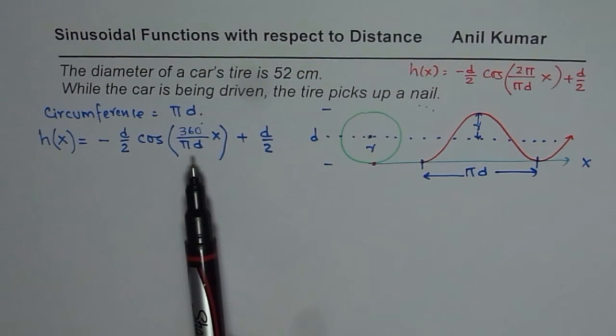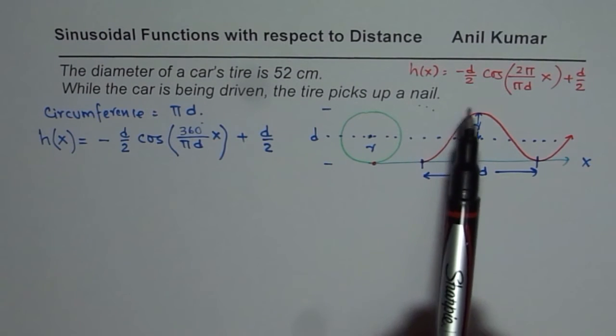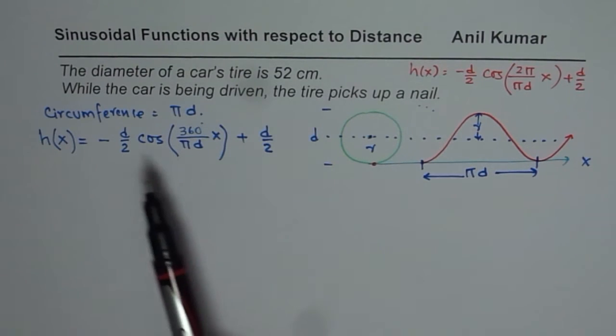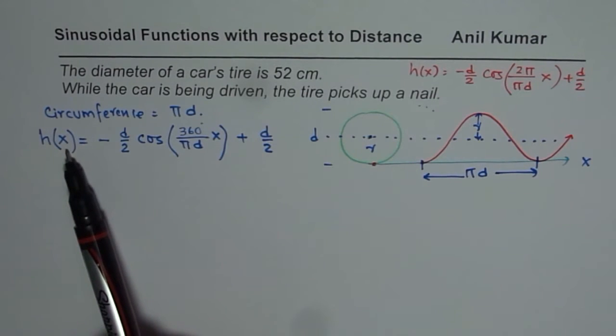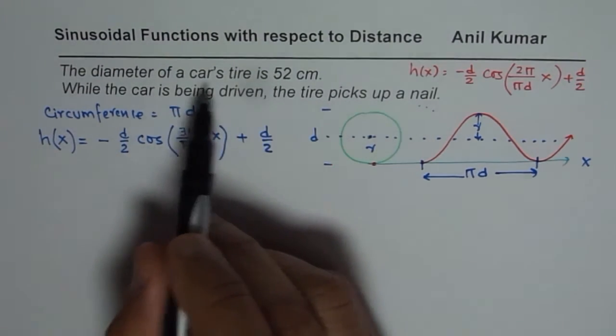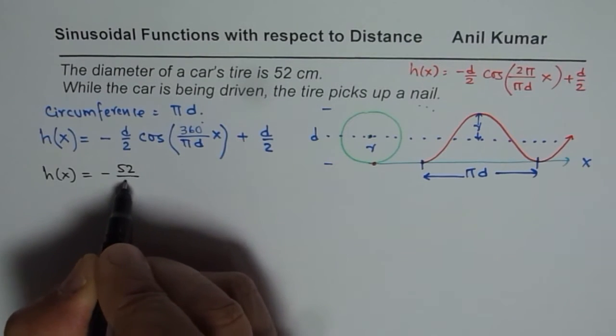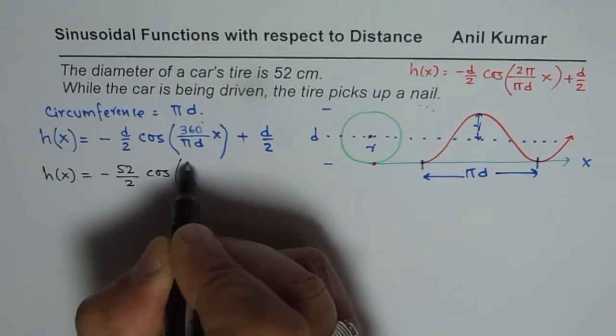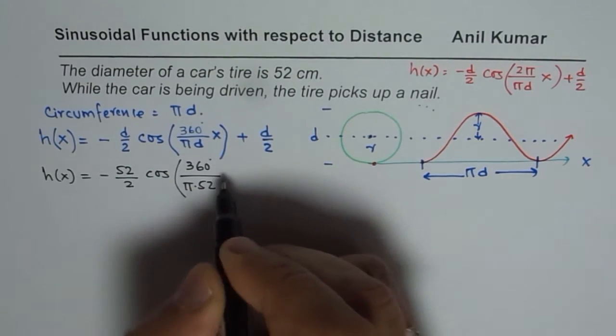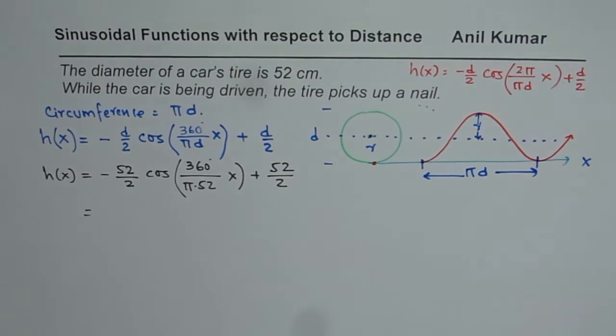Now, the question is, if I'm given that the tire's wheel is 52 centimeters, then what is the equation which represents the height of the nail at any distance traveled by the car? We are relating height of the nail with reference to distance traveled horizontally by the car. In this given scenario, where 52 is the diameter, we say height is equals to minus 52 half, cos of 360 degrees over 52π, times x plus 52 half. That helps you to capture the equation.